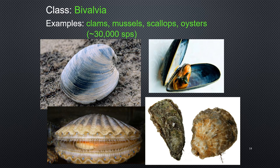Our next class is Bivalvia — these are the bivalves, probably something you're very familiar with. They have two shells, two halves, and that's why they're called bivalves. These are our clams, mussels, and oysters. One thing some people don't know is that clams have eyes — all along the edge are rudimentary eyes, and this picture shows them really well.